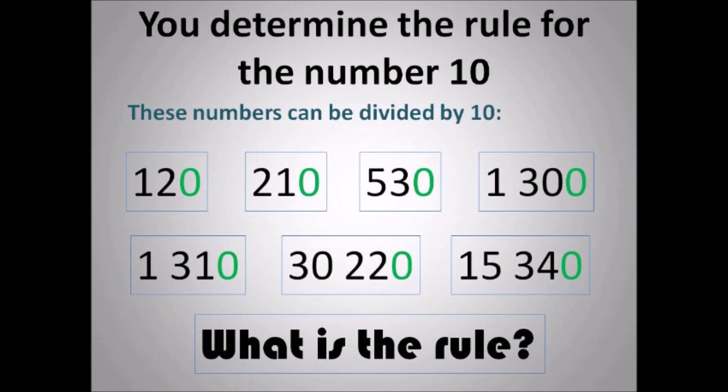Now do it for 10. This is the easiest one — I will not help you for 10. This is too easy, this is baby stuff. So just look at it and give me the rule for 10. Straightforward. Very simple.